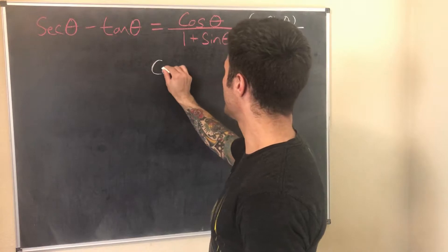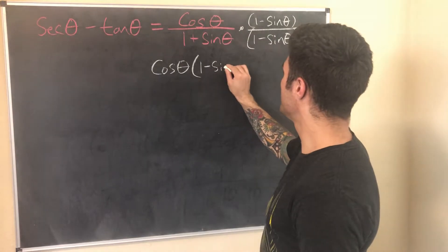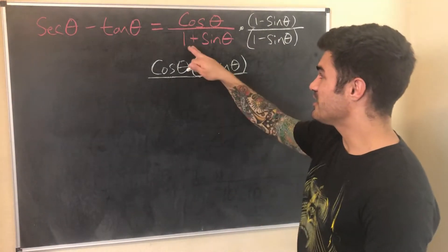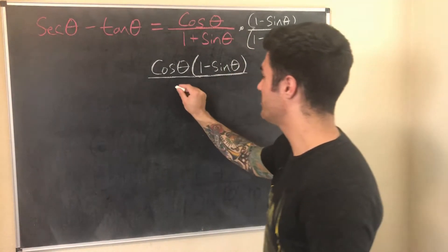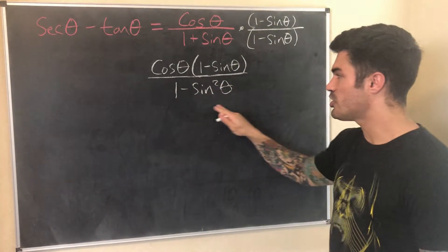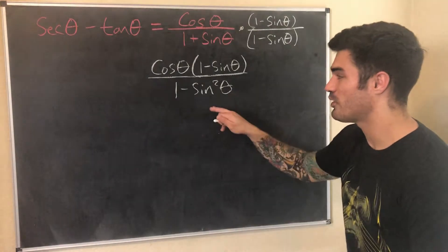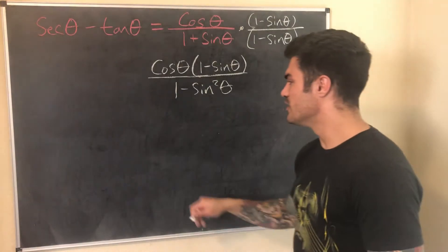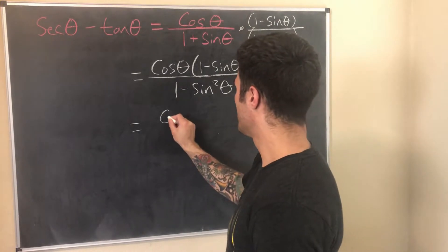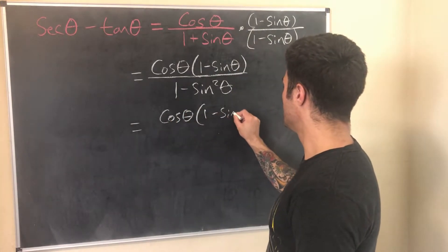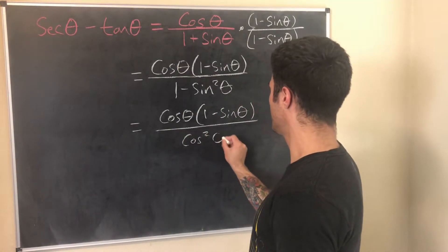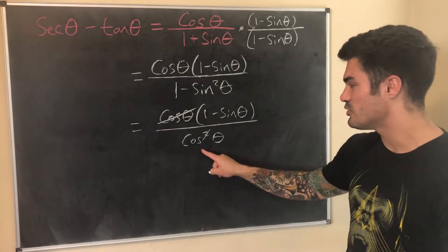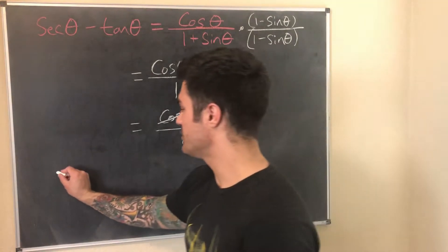When we multiply out the numerator we get cosθ — I'll leave it factored out front since distributing and then re-factoring would be extra work. The denominator (1 + sinθ)(1 − sinθ) gives cos²θ by the Pythagorean identity — essentially cos²θ = 1 − sin²θ. So we have cosθ · (1 − sinθ) over cos²θ. The cosine in the numerator cancels with one cosine from the denominator, leaving us with a single cosine in the denominator.